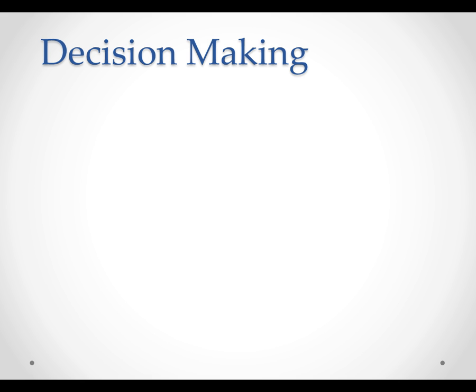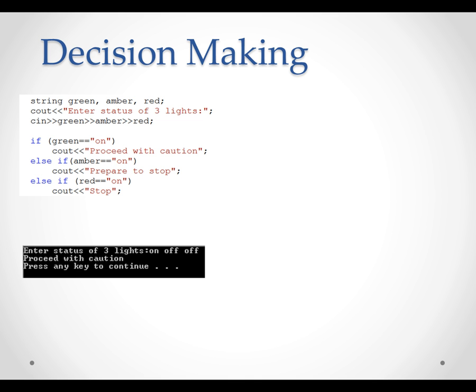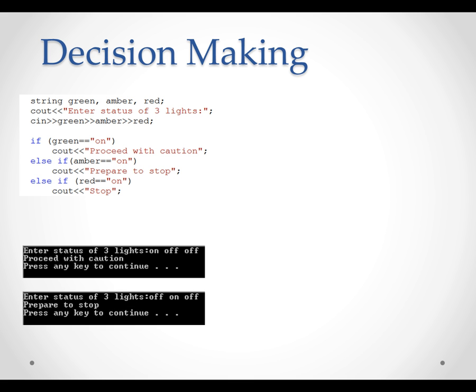Decision Making. In programming, very often we need to make a decision. For example, we can program a robot to recognize the traffic light and understand the traffic light rules. We can check the light's status one by one using the if-else chain: if green light is on, then proceed with caution. Otherwise, if amber light is on, prepare to stop. Otherwise, if red light is on, stop.